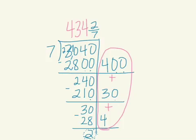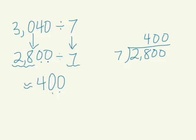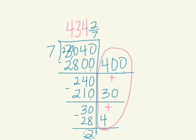434 and 2 sevenths. We go back to our problem — we're figuring out how many weeks are in 3,040 days. It didn't come out evenly; we've got a remainder, a part of a week. 2 sevenths of a week, which means two extra days. Our estimate was about 400, and our answer is 434 — close enough. Our final answer is 434 and 2 sevenths weeks, which means 434 whole weeks and two extra days left over.